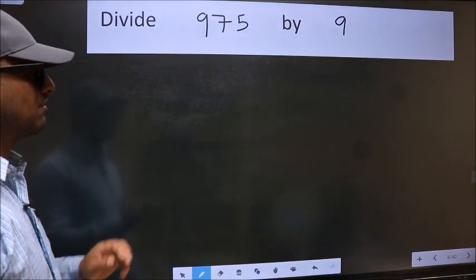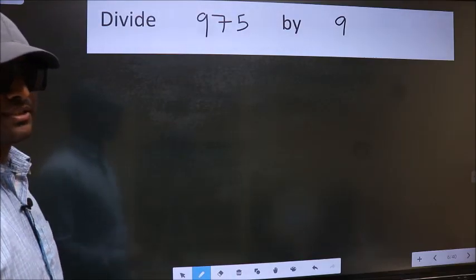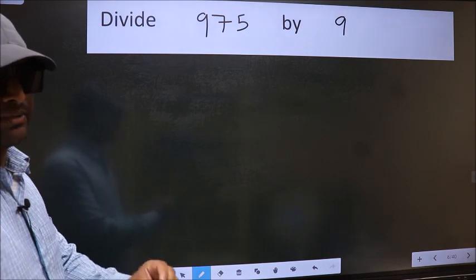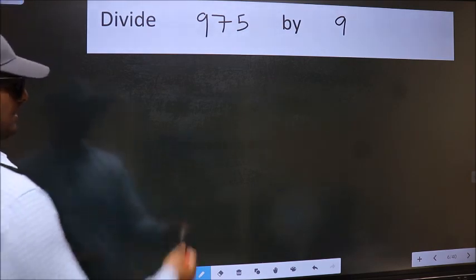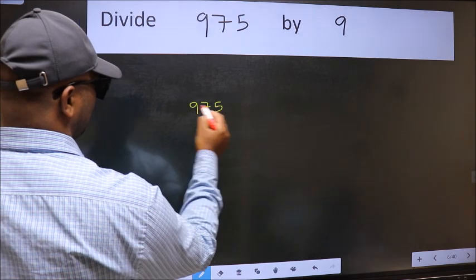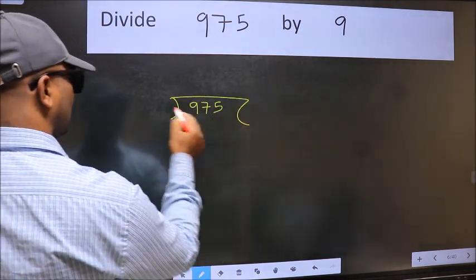Divide 9.75 by 9. To do this division, we should frame it in this way. 9.75 here and 9 here.